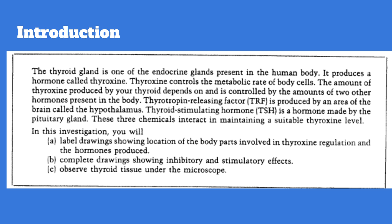So the introduction says the thyroid gland is one of the endocrine glands present in the human body. It produces a hormone called thyroxine. That's T4, as you watched in the videos. Thyroxine controls the metabolic rate of body cells. It helps manage our energy use, the temperature of our body, as well as other things. The amount of thyroxine produced by your thyroid depends on and is controlled by the amounts of two other hormones present in the body.